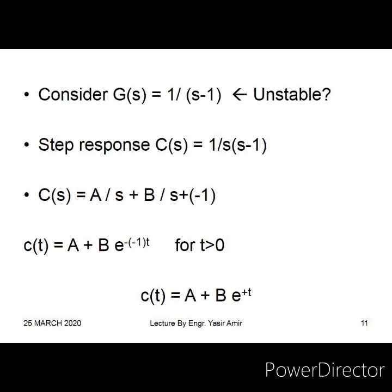Using the steps seen in previous lectures, we find the partial fraction expansion and use the Laplace transform table to find the response in the time domain. As an exercise, find the values of coefficients A and B. When we take the inverse Laplace transform, we get c(t) = A + B·e^(+t). This positive power in the exponential is the culprit — if t keeps on increasing, this term will keep on growing larger and larger.